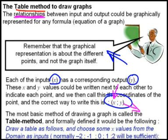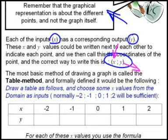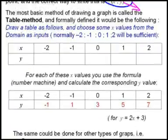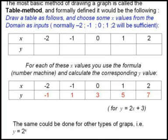Now the most basic method of drawing a graph is called the table method. And formally defined it would be the following. Now just before we look at that, remember the table method is the most powerful foolproof method to draw any graph. If you have the equation and you need to draw the graph, use the table method. Any type of graph. It is very laborious at times, but it is foolproof.